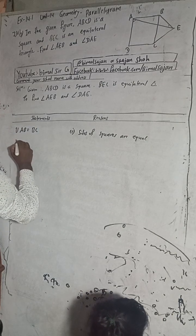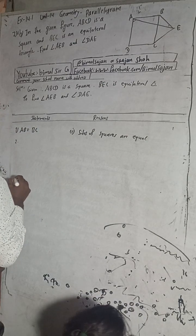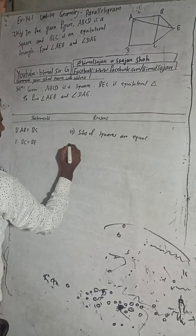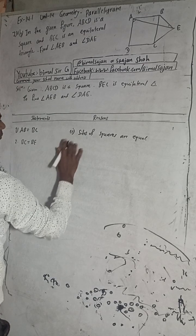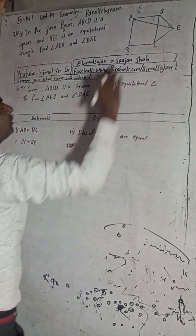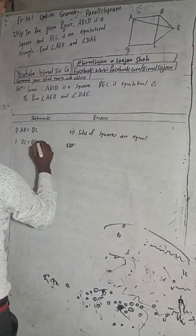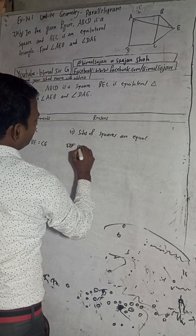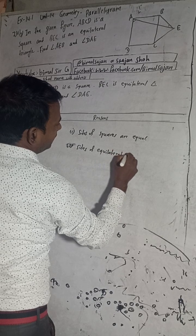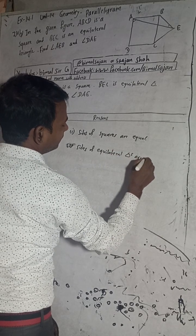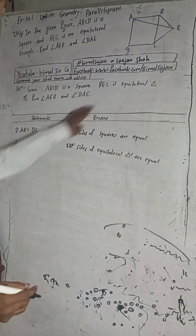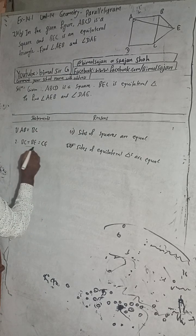For step 2, BC is equal to BE. This is the given part — equilateral triangle means all sides are equal, so BC equals BE.